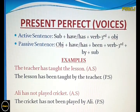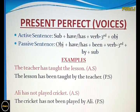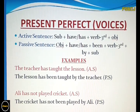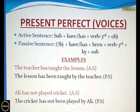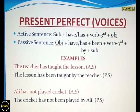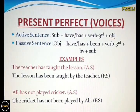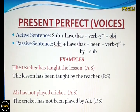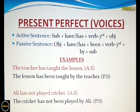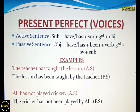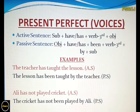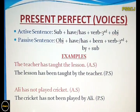The passive formulation of present perfect is: object plus have or has plus been plus the third form of the verb plus by plus subject.